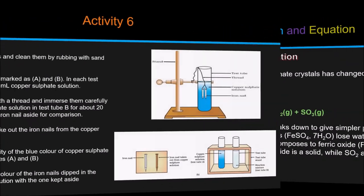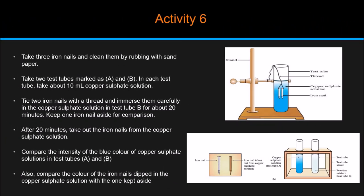Moving on to next activity, that is activity 6. This is a part of displacement reaction. To complete this reaction, take 3 iron nails and clean them by rubbing with sandpaper. Take 2 test tubes marked as A and B. In each test tube, take about 10 ml copper sulfate solution. Tie 2 iron nails with a thread and immerse them carefully in the copper sulfate solution in test tube B for about 20 minutes. Keep 1 iron nail aside for comparison. After 20 minutes, take out the iron nails from the copper sulfate solution. Compare the intensity of the blue color of copper sulfate solutions in test tubes A and B. Also, compare the color of the iron nails dipped in the copper sulfate solution with the one kept aside.